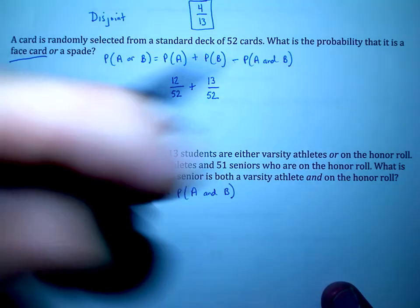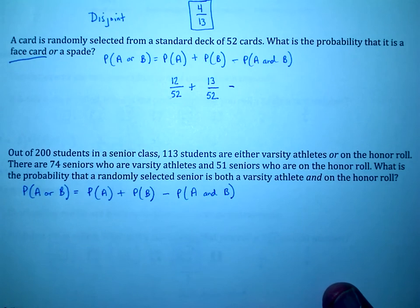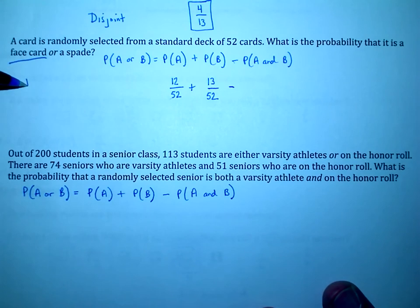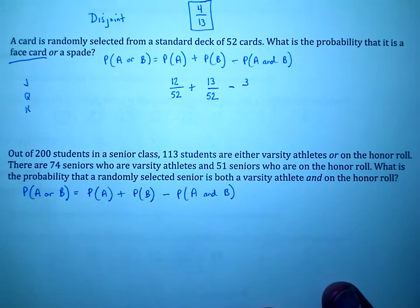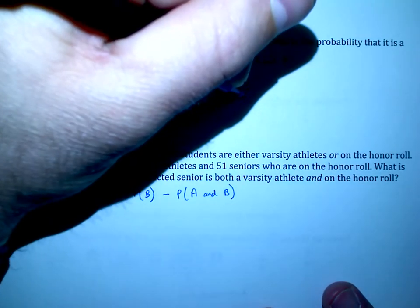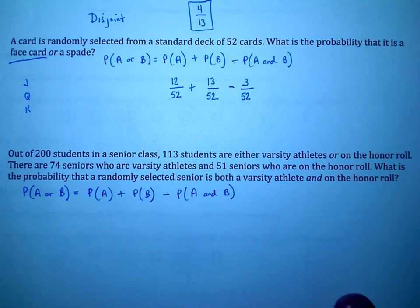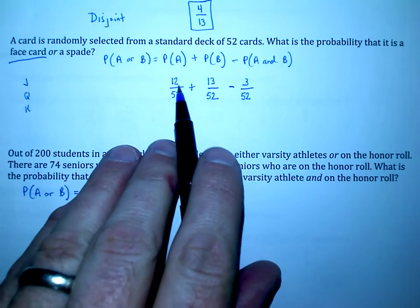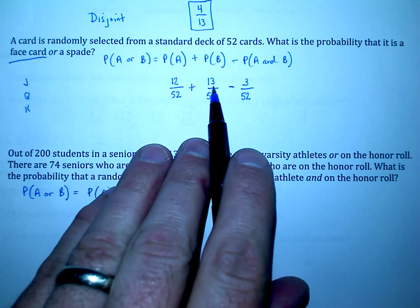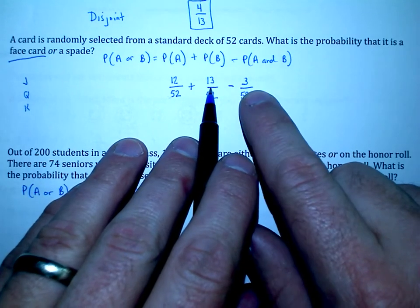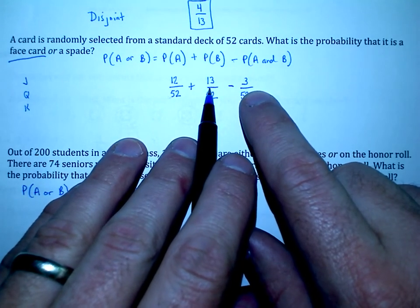Now we just need to worry about this: is it possible for me to have a face card and a spade? The answer is yes. You've got the jack of spades, you've got the queen of spades, and you've got the king of spades. In each case we have three cards that meet the requirement of being both a face card and a spade at the same time. Here's what I'm going to do: I'm going to take 12 over 52, add 13, then subtract 3.